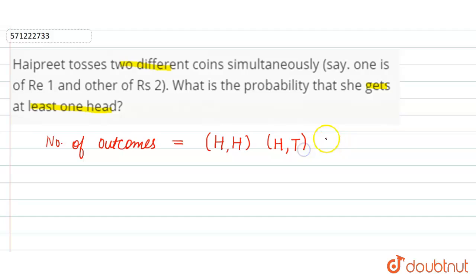Then third outcome can be: on the first coin it's tail and on the second coin head. Then on the first coin tail and on the second coin tail. So these are the four possible outcomes when two coins are tossed simultaneously.